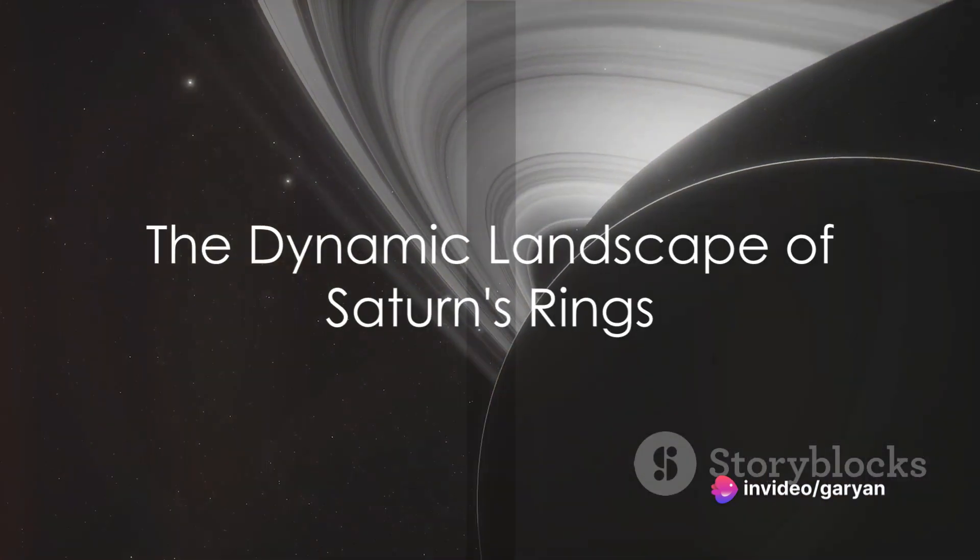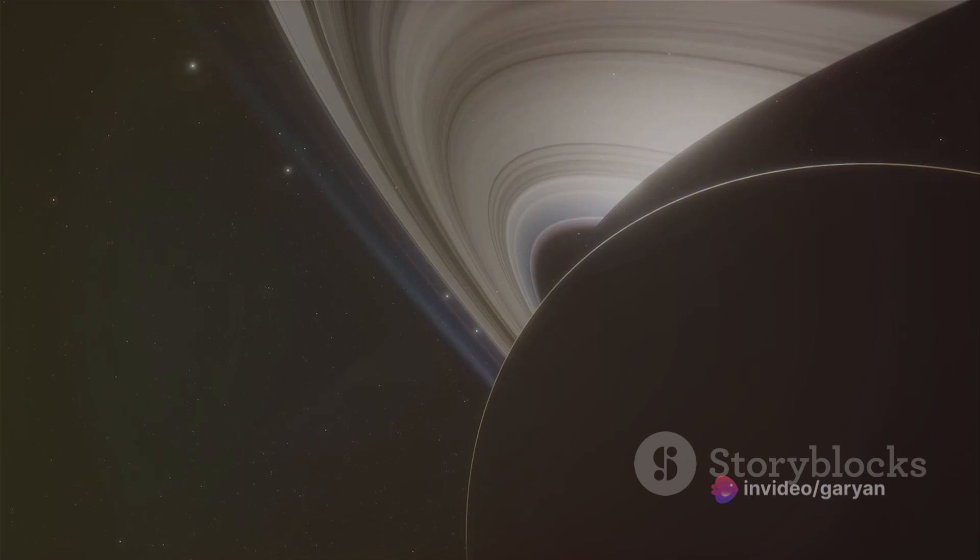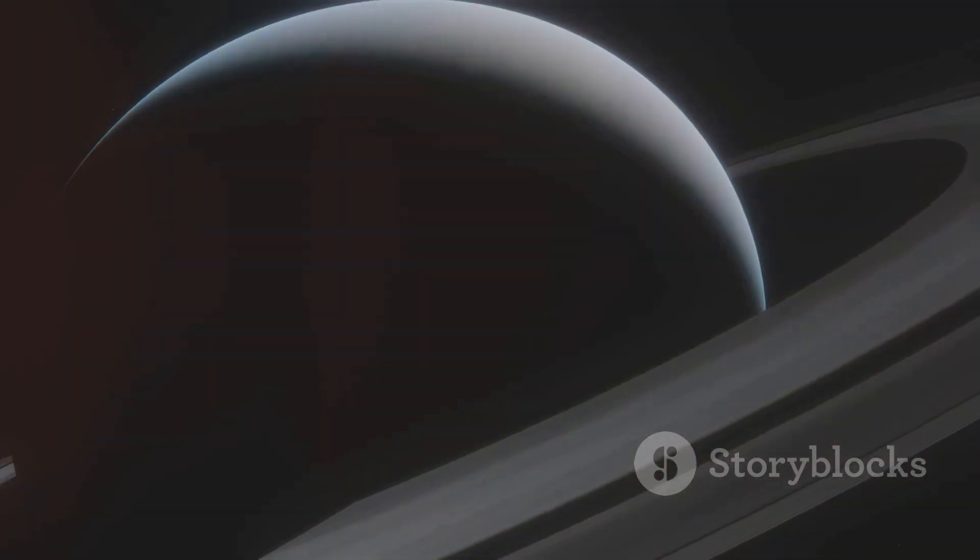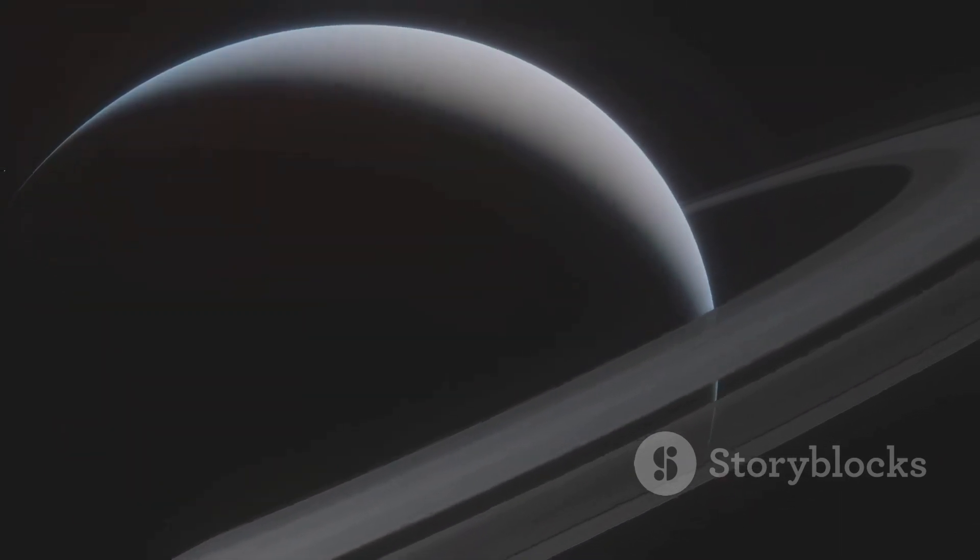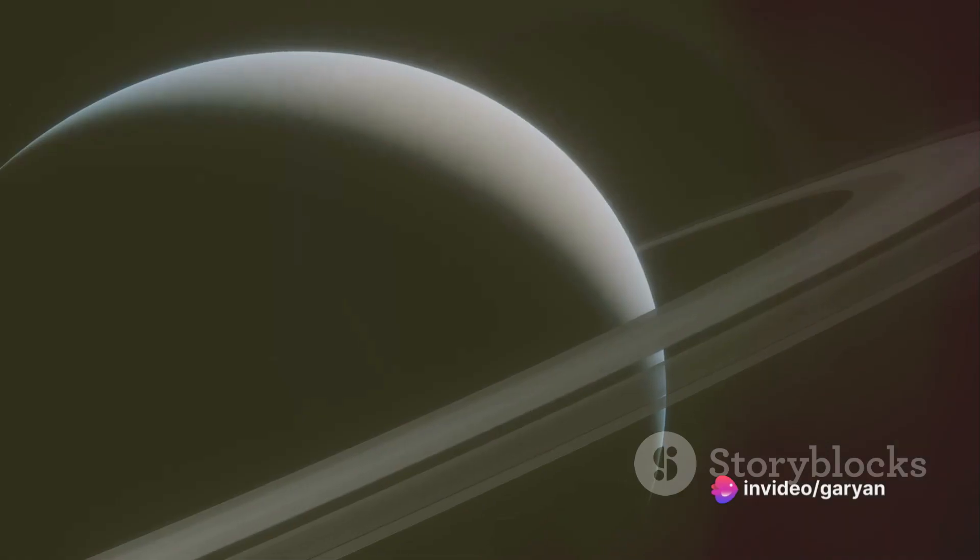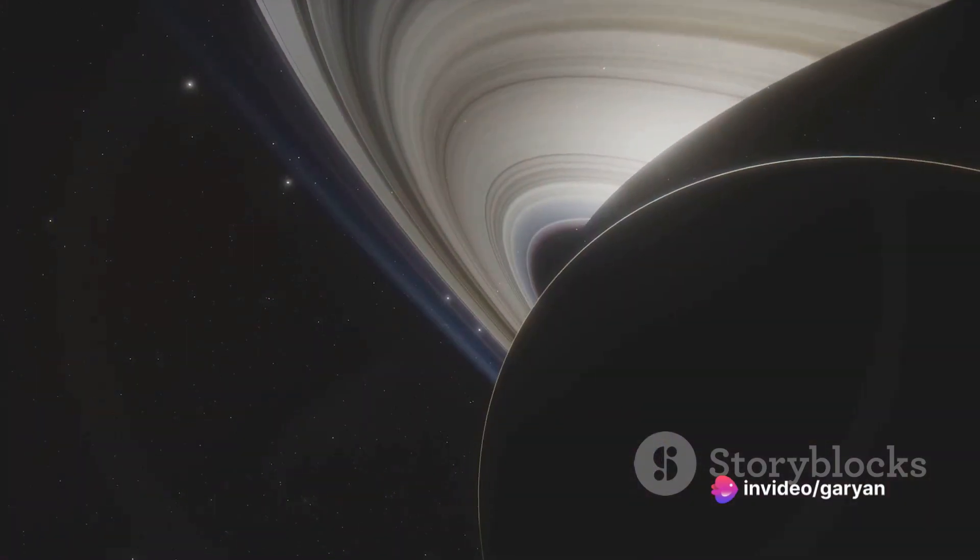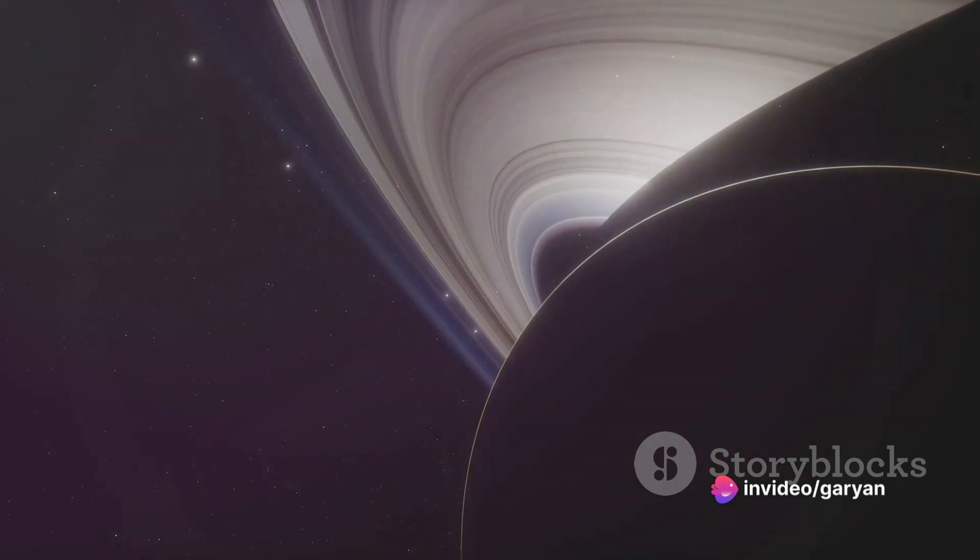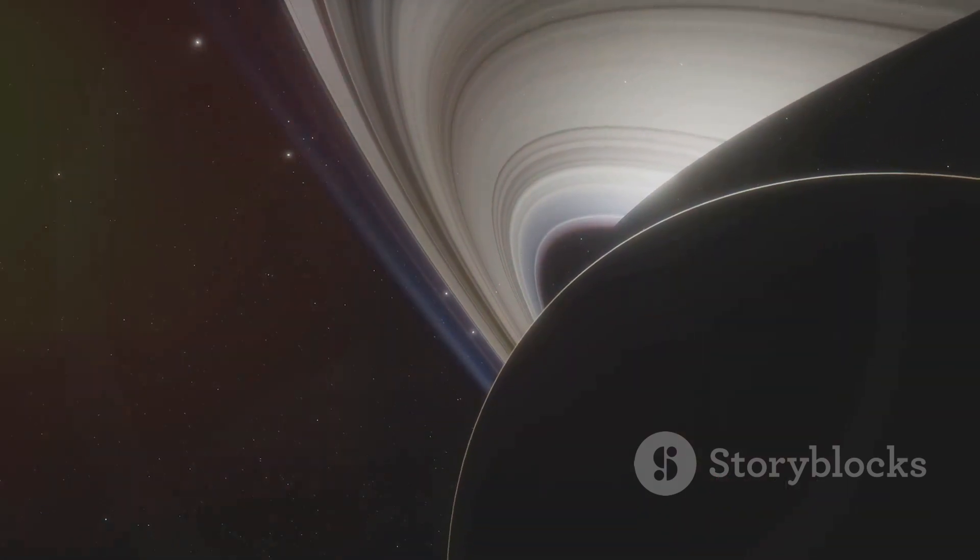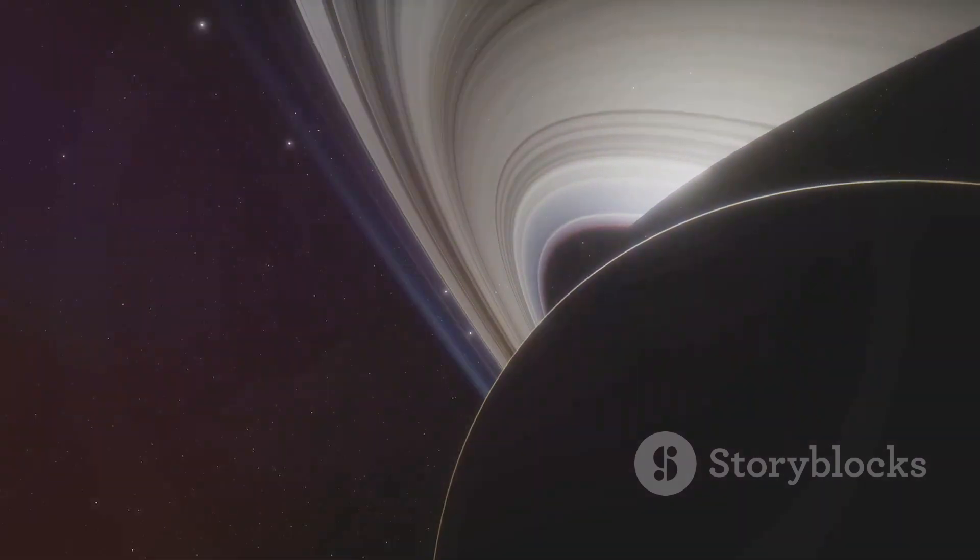But here's the twist. These aren't static structures like the mountain ranges on Earth. The B-ring peaks have a fluidity that's truly alien, as if they were made of water rather than rock and ice. They rise and fall in response to the gravitational influence of tiny moonlets darting within the rings, creating a dynamic landscape that's constantly in flux.